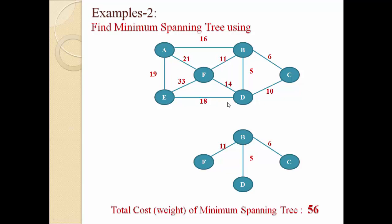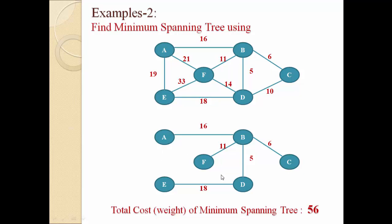Next, A to B has cost 16 so we select that edge. Then D to E has cost 18 so we select that edge. After this, cost 19 would create a cycle with A to D, and likewise no further edges can be added without generating a cycle. So we stop here and compute the total cost: 16 + 11 + 18 + 5 + 6 = 56. The minimum spanning tree of this graph has a total cost of 56.